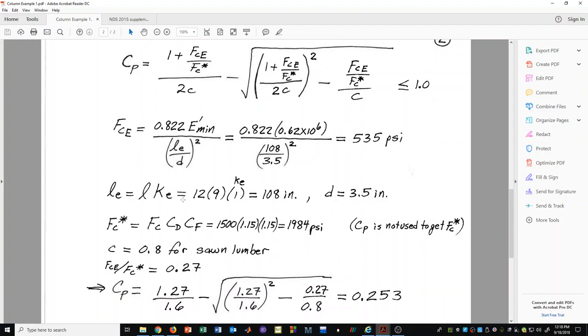It is useful when doing this by hand to calculate this ratio, FCE over FC star. If we do that, we get 0.27 from the values we have already calculated.